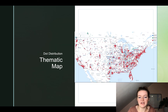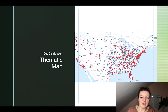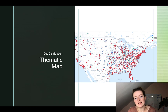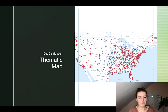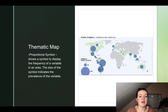Here we're looking at another dot distribution map — this time pizza chains. In red we're looking at Domino's, green is Papa John's, and blue is Pizza Hut. Take a moment, see where these pizza chains are most prevalent and where they're least prevalent.